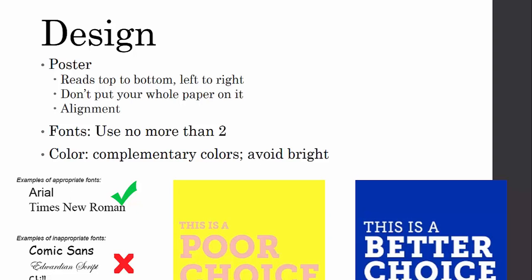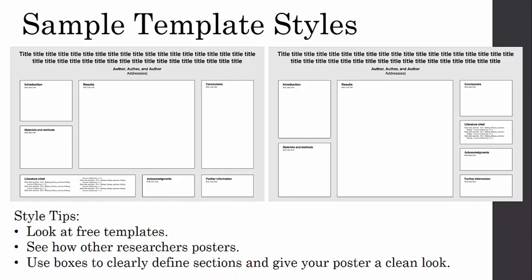For colors, you can use complementary colors, but try to avoid things that are too bright. Bright colors do grab attention, but they can also distract from the purpose. Some appropriate fonts include Arial and Times New Roman — pretty simple choices. Examples of inappropriate fonts would be Comic Sans, script fonts, or anything that grabs attention but not the kind you're really working for.